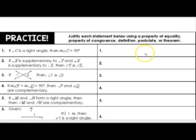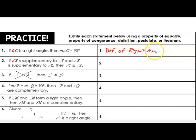Let's do a little practice before we dive into proofs to get a feel for how these are used. Number one: if angle C is a right angle, then the measure of C is equal to 90 degrees — that's the definition of a right angle. Number two: if angle X is supplementary to angle Y and angle X is supplementary to angle Z, then angle Y is congruent to angle Z. This is the congruent supplements theorem — two angles supplementary to the same angle are congruent.